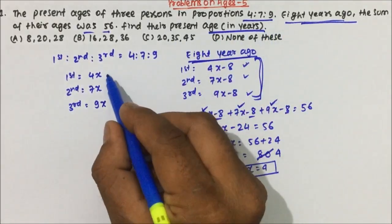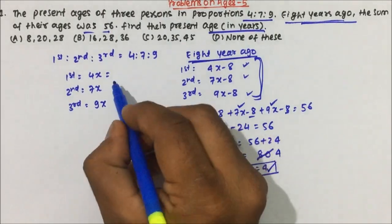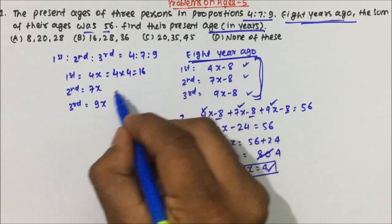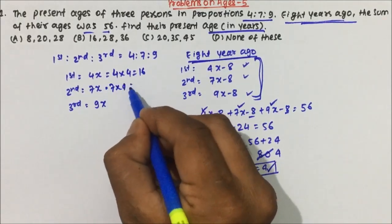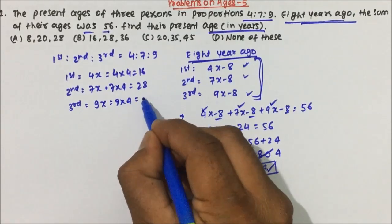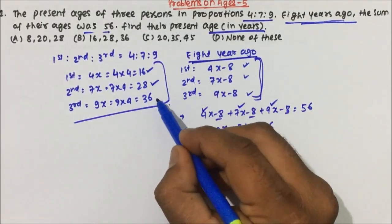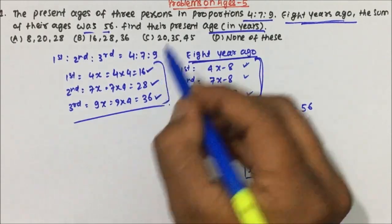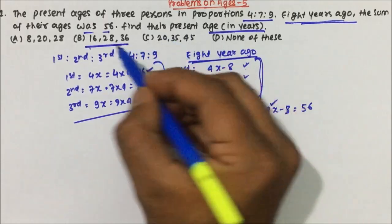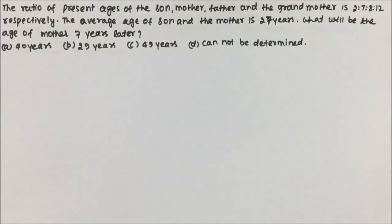What has been asked is to find their present ages. The age of the first person is 4x = 4 × 4 = 16. The second person's age is 7 × 4 = 28, and the third person's age is 9 × 4 = 36. So the first person's age is 16, the second is 28, and the third is 36. Option B is the correct answer.